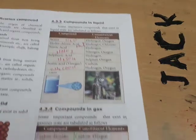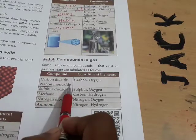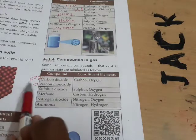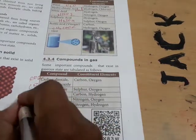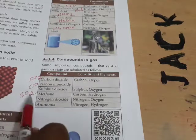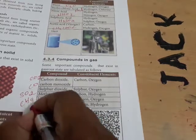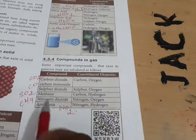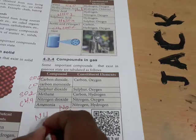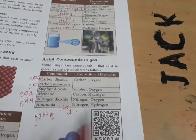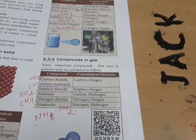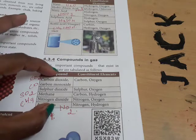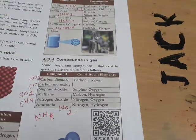Next we will see compounds in the gaseous state. Carbon dioxide is CO2 (carbon and oxygen). Carbon monoxide is CO. Sulfur dioxide is SO2 (sulfur and oxygen). Methane is CH4 (carbon and hydrogen). Nitrogen dioxide is NO2 (nitrogen and oxygen). Ammonia has the formula NH3, containing nitrogen and hydrogen. These are examples of compounds in the gaseous state.